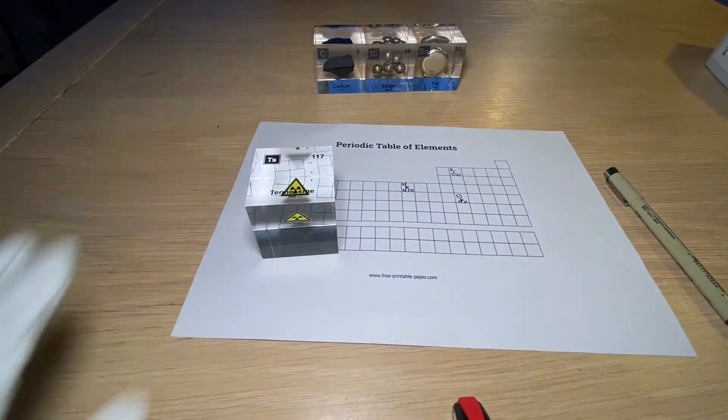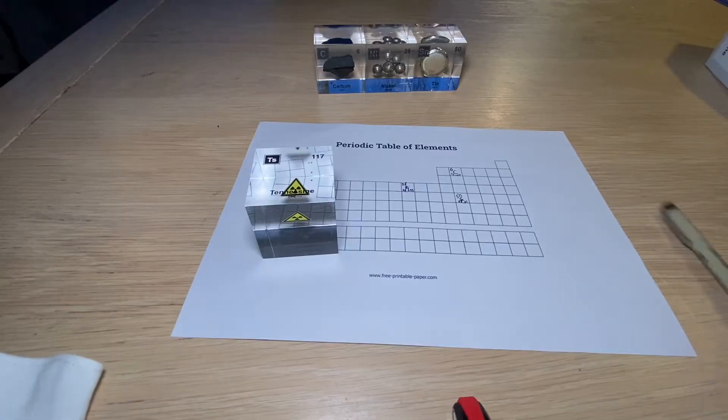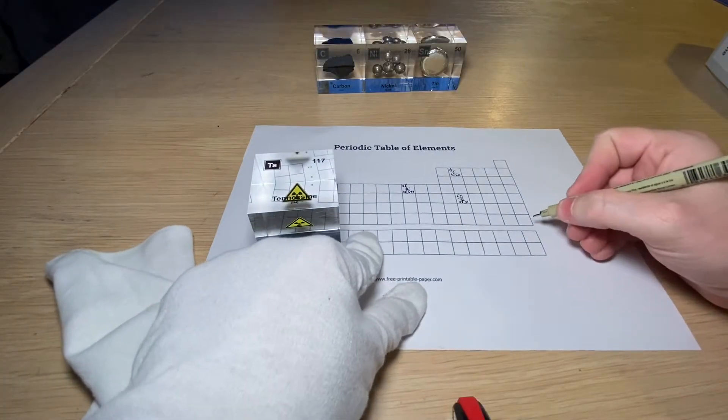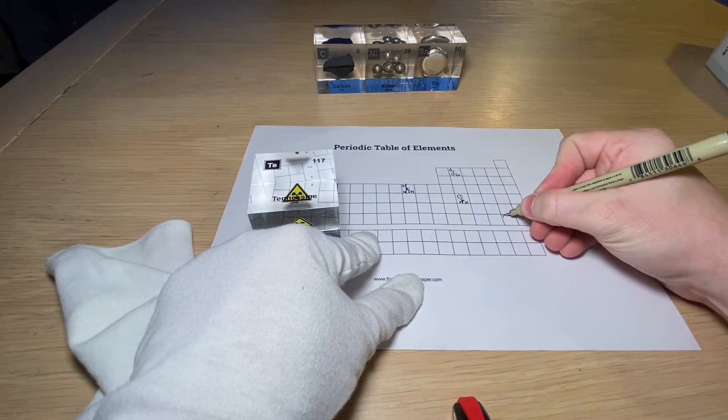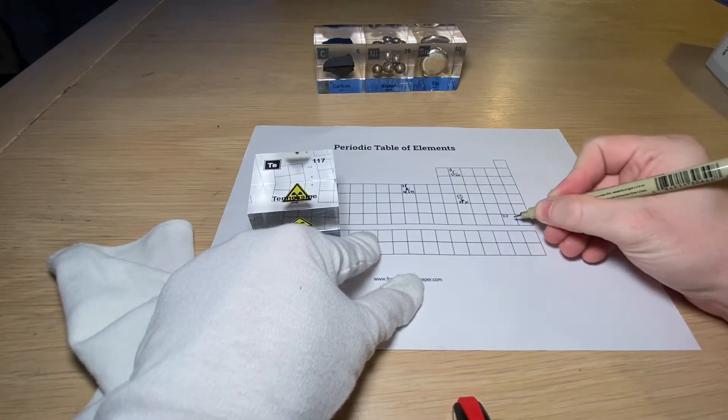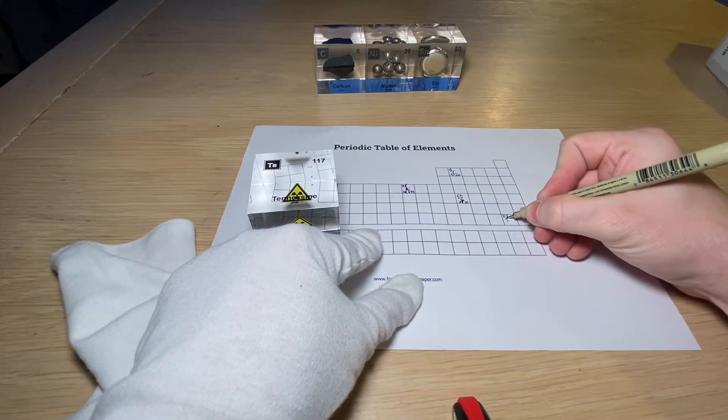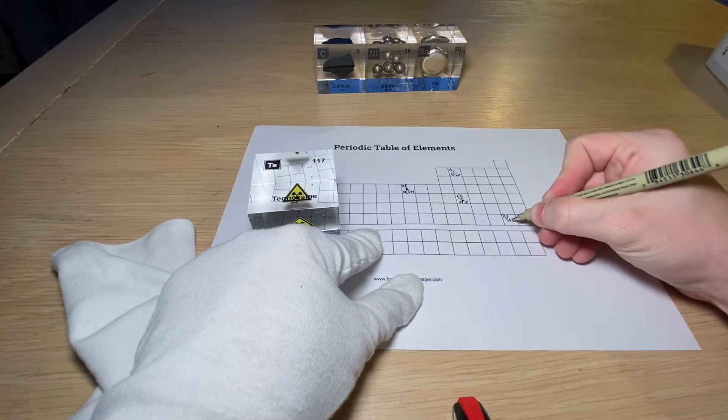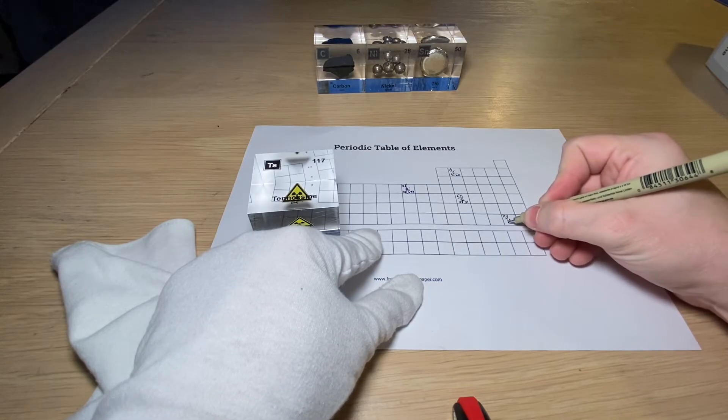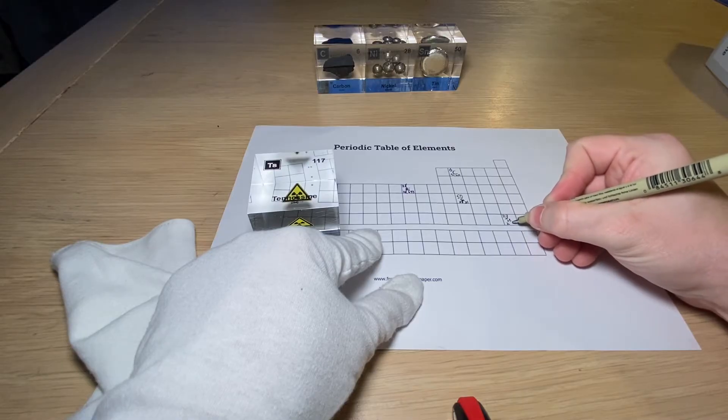Let's write some stuff down about Tennessine. So we got element 117, which is the fourth last element of the periodic system, T S, and it has an approximate mass of 294.